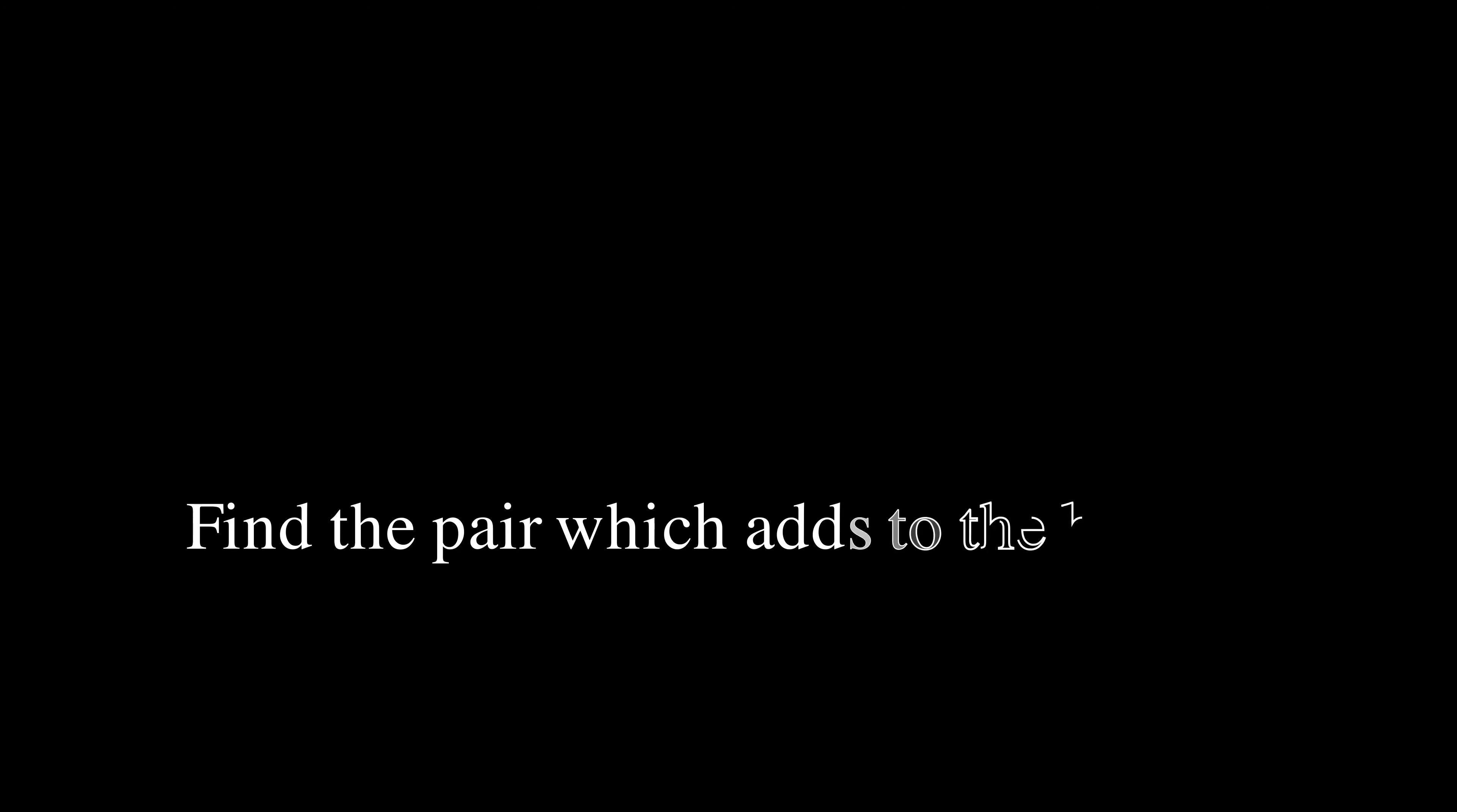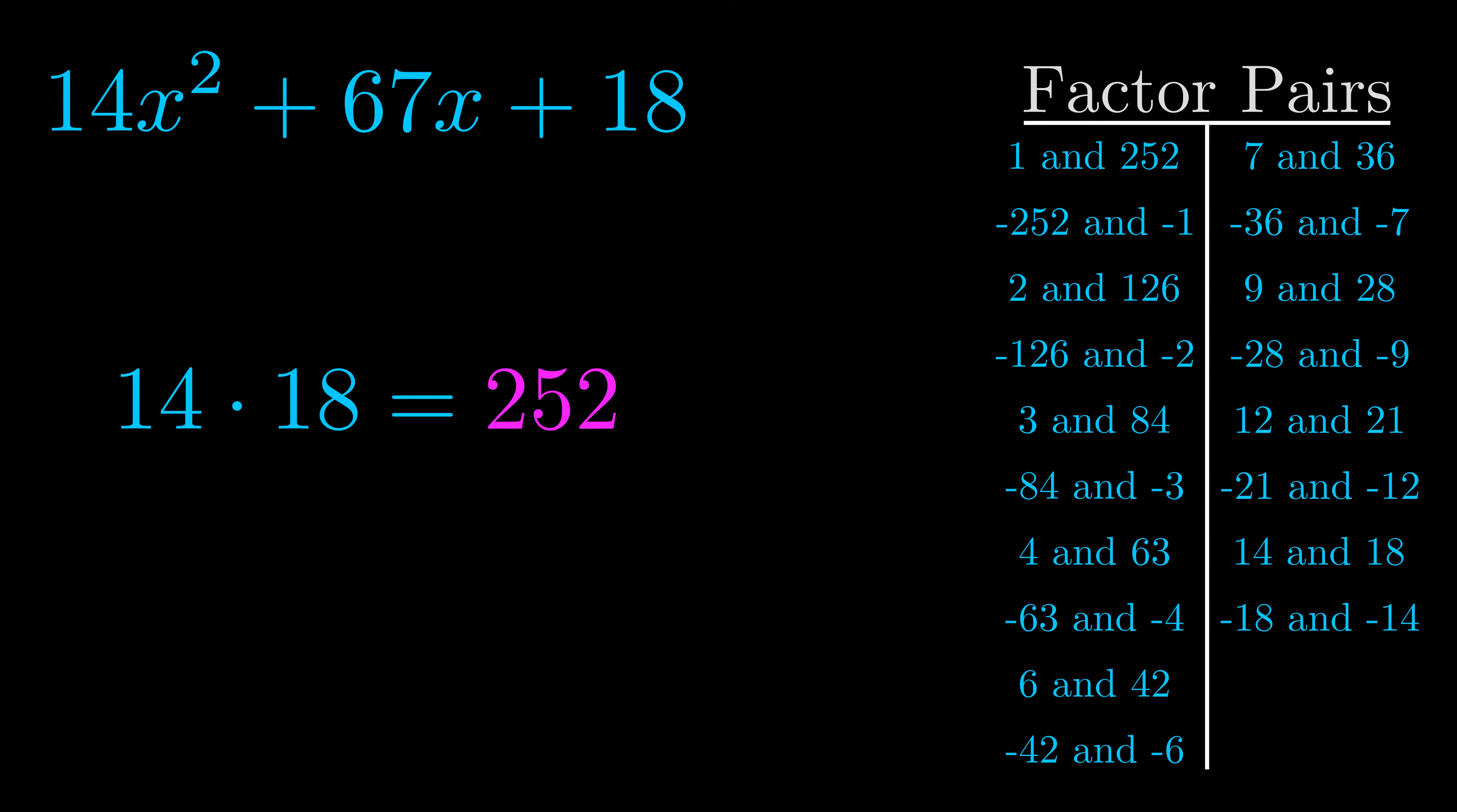The b value is the coefficient on the x term. That's the middle term, the one that we haven't done anything with yet. And really this is the only factor pair that we need.